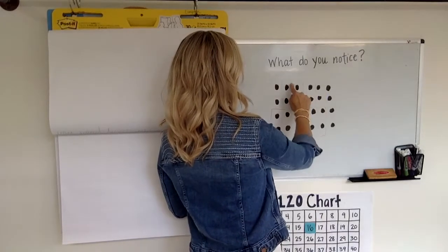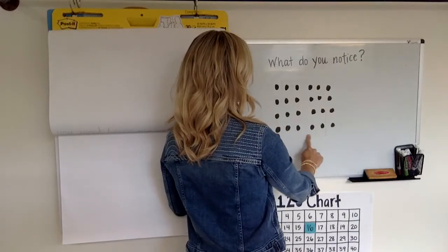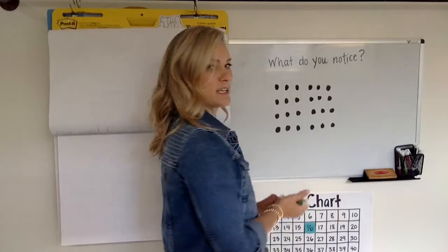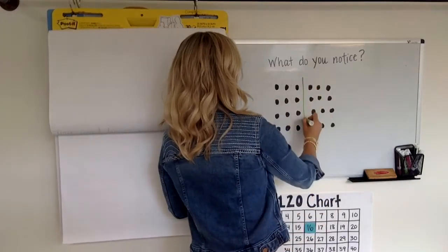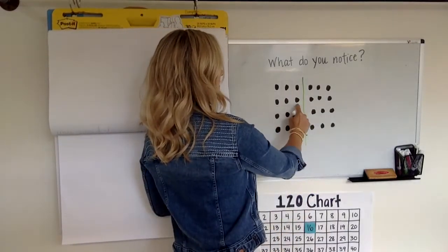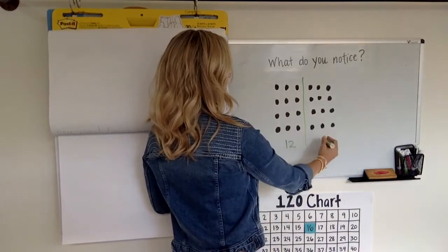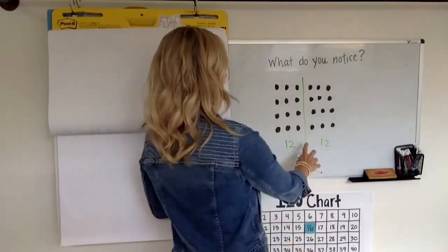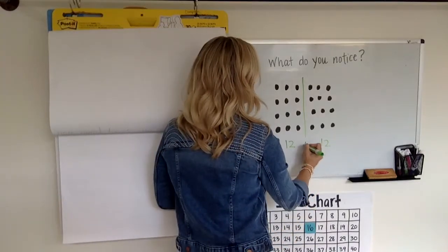All right, I'm gonna guess that some of you probably wondered, what would happen if I split this into groups? So I bet some of you probably noticed that if you split it down the middle, you would have one, two, three, four, five, six, seven, eight, nine, 10, 11, 12 on this side, so that means 12 are also on this side. So I bet some of you thought 12 plus 12 is 24, so there's 24 dots.